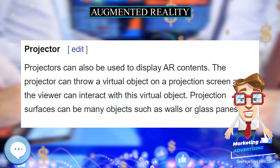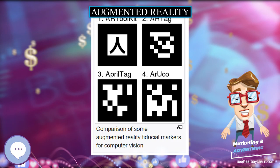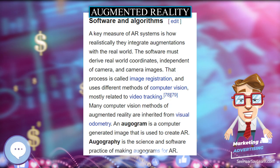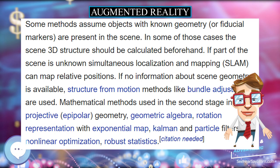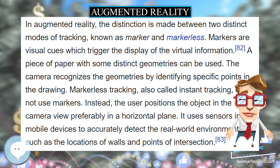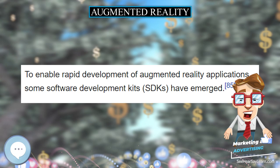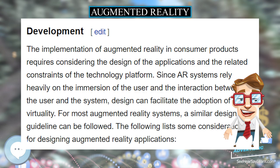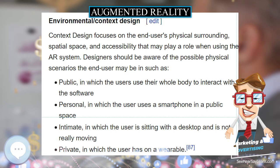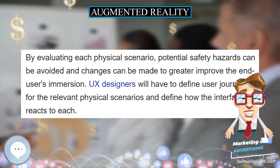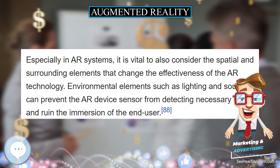Mathematical methods used in the second stage include projective and epipolar geometry, geometric algebra, rotation representation with exponential map, Kalman and particle filters, non-linear optimization, and robust statistics. In augmented reality, the distinction is made between two distinct modes of tracking: marker and markerless. Markers are visual cues which trigger the display of virtual information — a piece of paper with some distinct geometries can be used; the camera recognizes the geometries by identifying specific points in the drawing. Markerless tracking, also called instant tracking, does not use markers. Instead, the user positions the object in the camera view, preferably in a horizontal plane, and it uses sensors in mobile devices to accurately detect the real-world environment, such as the locations of walls and points of intersection.